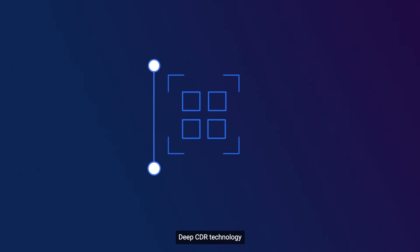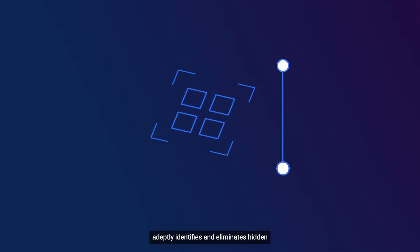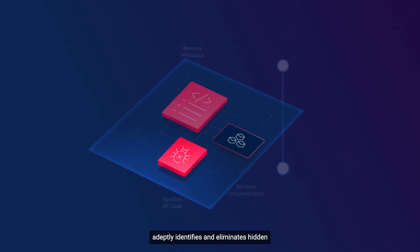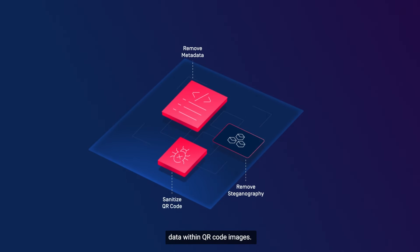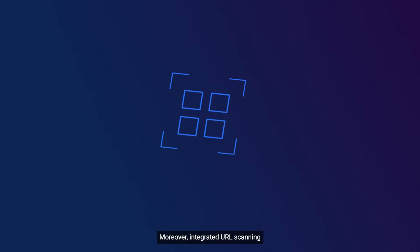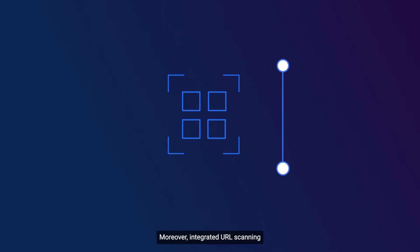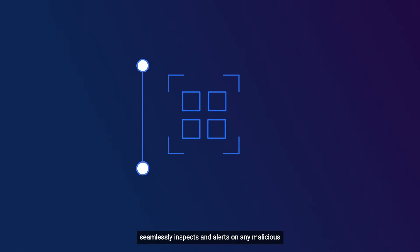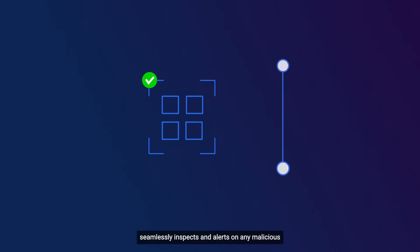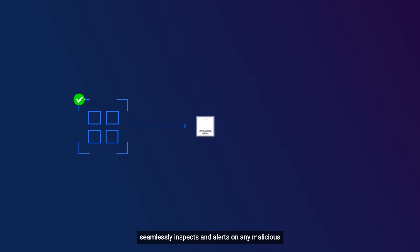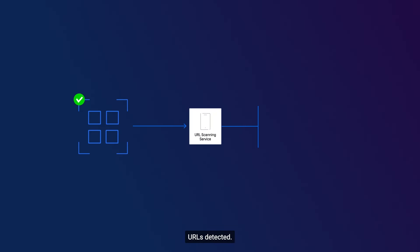Deep CDR technology adeptly identifies and eliminates hidden data within QR code images. Moreover, integrated URL scanning seamlessly inspects and alerts on any malicious URLs detected.